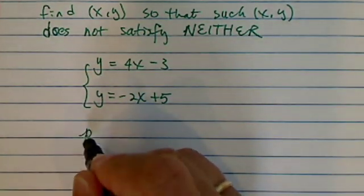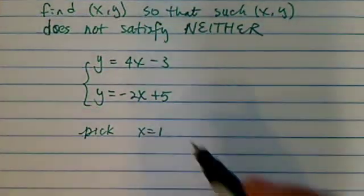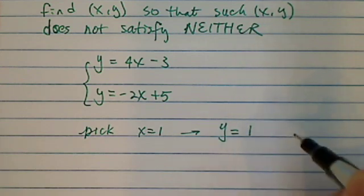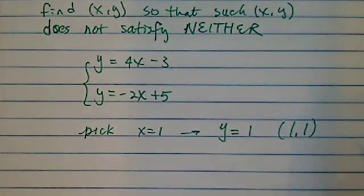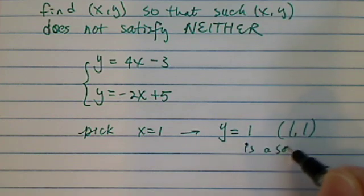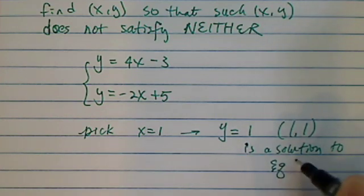So the trick is to simply pick, let's say x equals 1. Solving the first equation, we have y equals 1. So (1,1) solves this first equation.